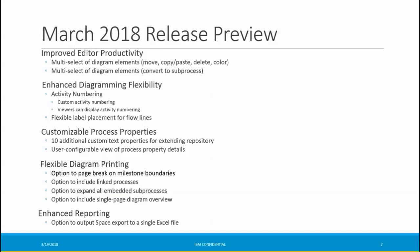With this release of BlueWorks Live, we've improved the productivity and flexibility of diagram editing, so editors can now select multiple diagram elements to move, copy, delete, and color. The selected elements can also be converted to a sub-process. Editors can define custom activity numbering for their process diagrams, viewers can turn on that activity numbering, and editors can reposition line labels in their diagrams.